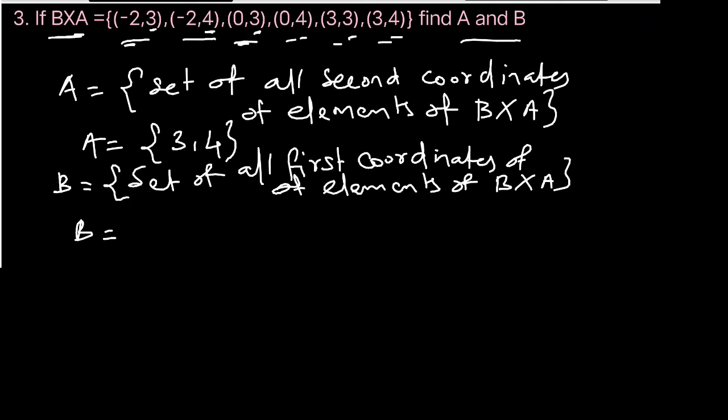The first coordinates are -2, 0, 3. So set B = {-2, 0, 3}.